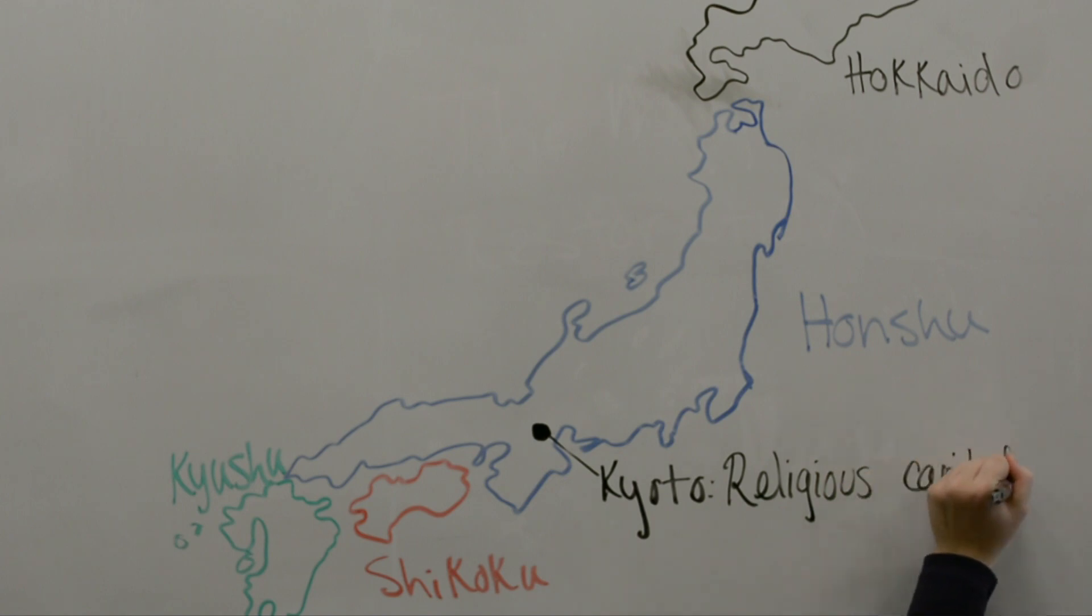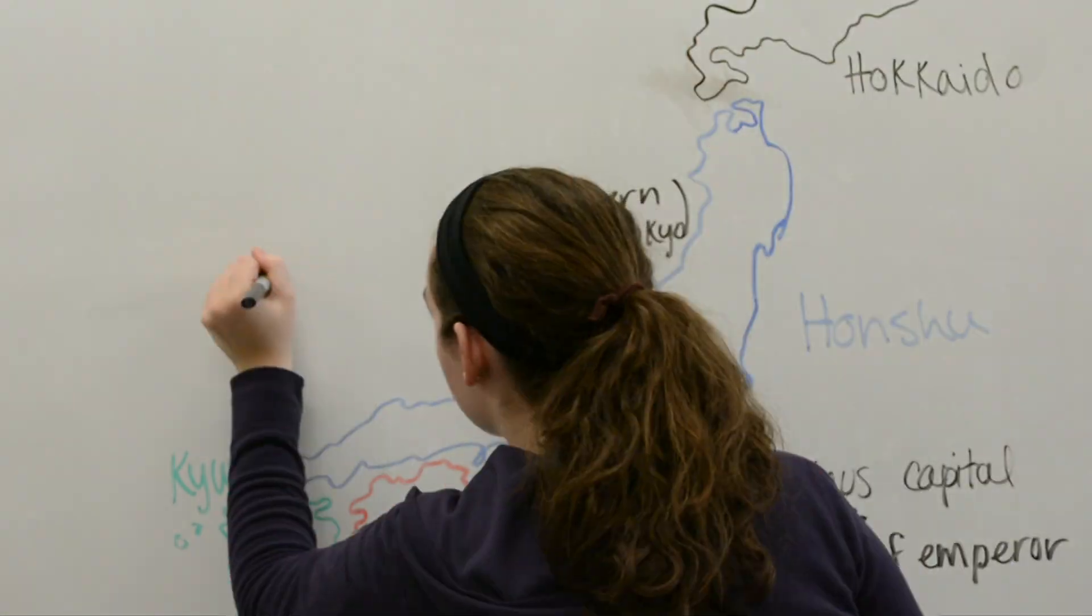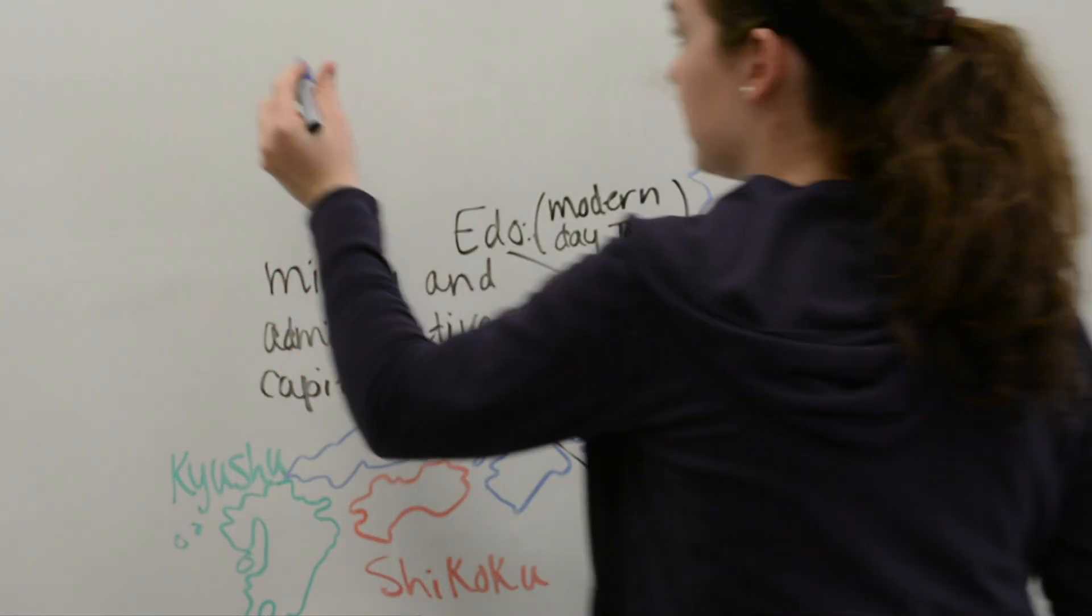Kyoto was a religious capital where the emperor lived. The emperor was a semi-divine being in the country's natural religion, Shinto, a combination of Jesus and the Pope. Buddhism is also very important in Japan. Edo, modern-day Tokyo, was the administrative capital where the military government was, called the Bukufu.